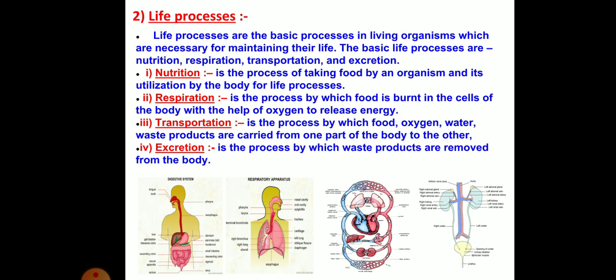Looking at the diagrams: first is the digestive system. Whenever we intake food, it must be digested properly, and undigested food must also be removed from our body — that is the excretion process. How toxic products get removed from our body. In the respiration process, energy is created from the carbohydrates.